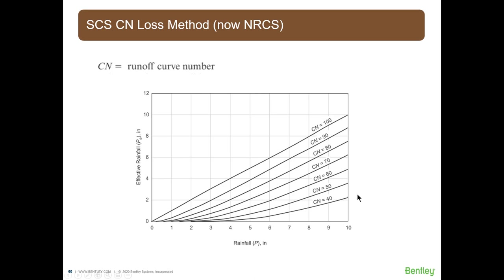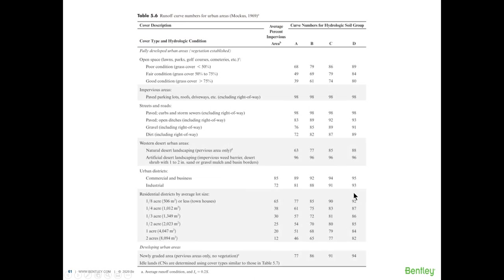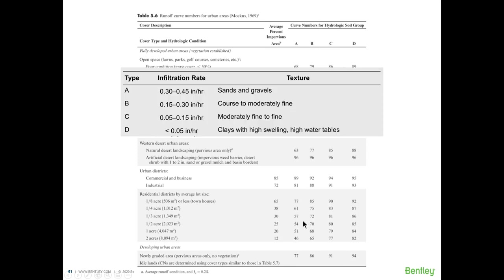The CN tables depend on soil type, land use, and hydrologic condition of the catchment. To use the table, find the cover description — for example, residential districts with half-acre lot size, equivalent to about 25% impervious area — then determine the hydrologic soil group. If the soil is sands and gravels, you would use Type A, and your curve number would be 54.